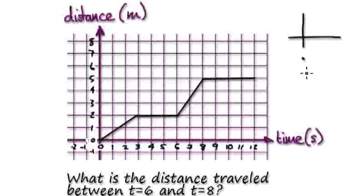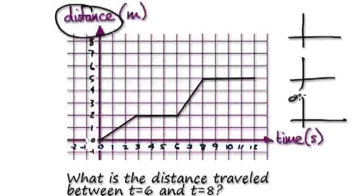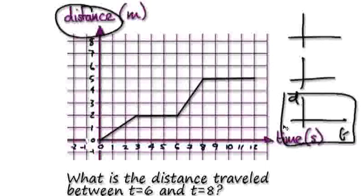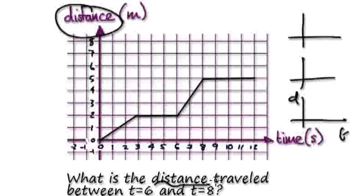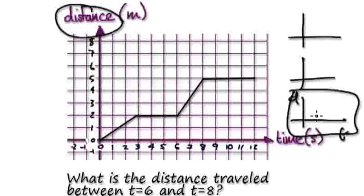Picture the three graphs. The graph given to you here is the distance-time graph. You've been given this graph to work with. You've been given the distance-time graph and you're being asked about the distance, so it's just a matter of straight reading. The straight reading here is between time 6 and 8.